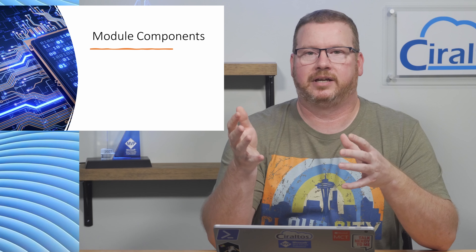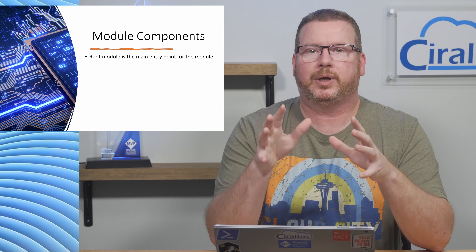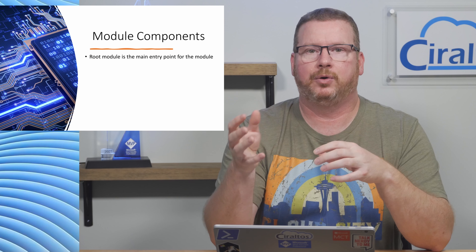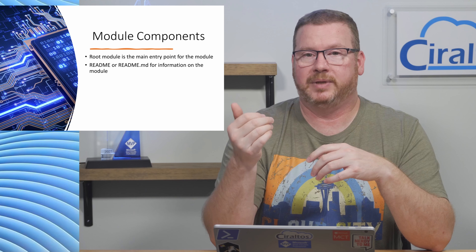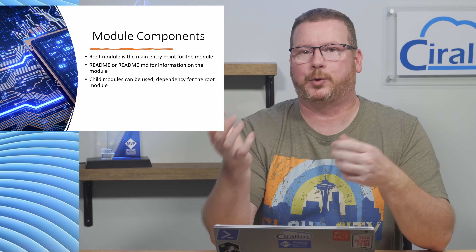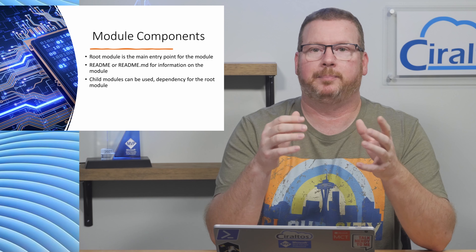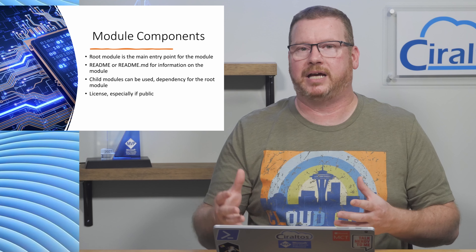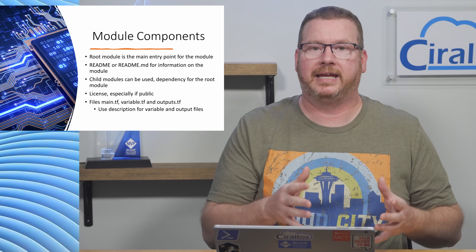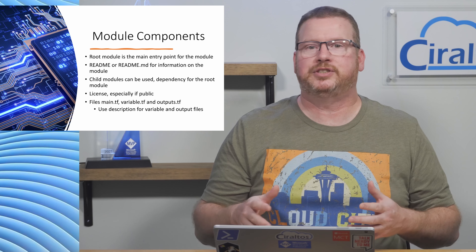Let's go a little further with the structure of a module. I'm going with a standard module structure from the Terraform documentation. We'll start with the root module — this is the main entry point and the only requirement when creating a module. It should have a README file, either called README or README.md. A module with a README file is intended to be reused; a module without one is intended only to be a dependency to the parent module. A license should be included, especially if the module will be published publicly. There'll be a main.tf, variables.tf, and an outputs.tf file that defines the outputs. Descriptions should be included with variables and outputs.